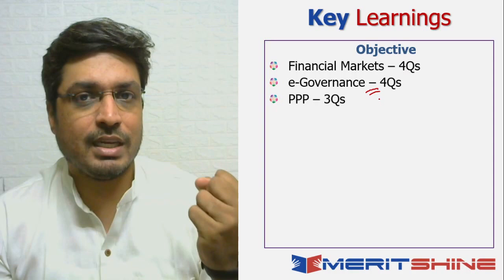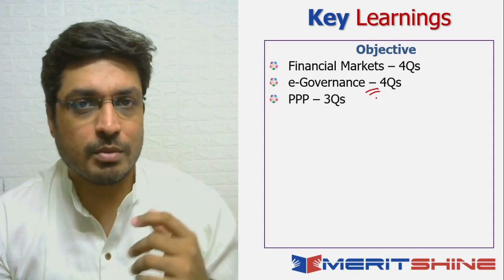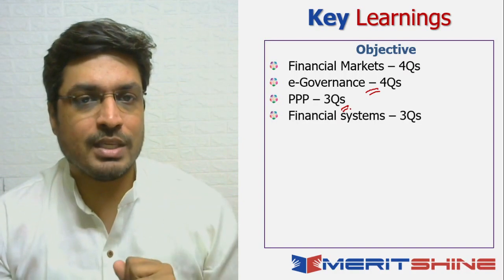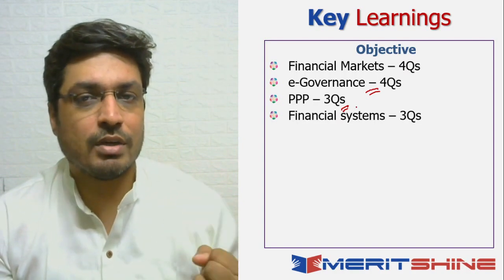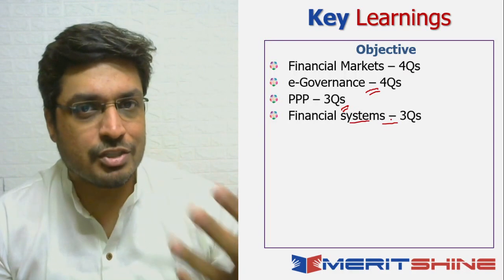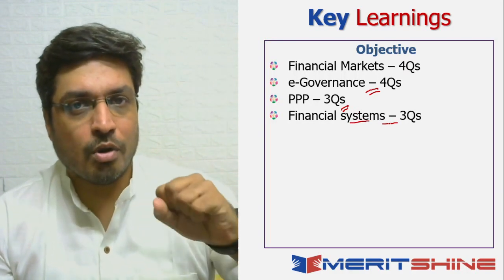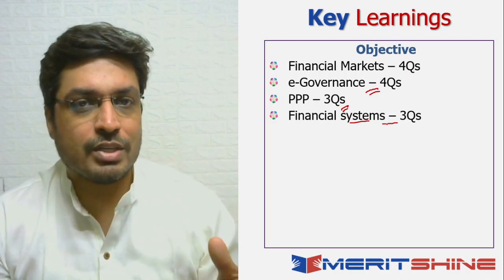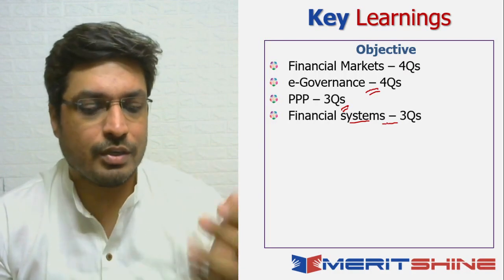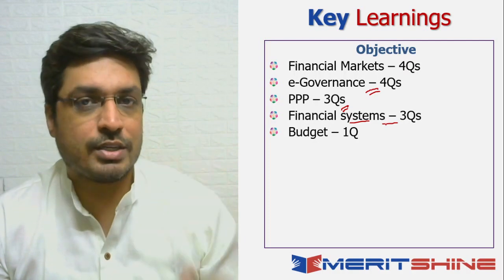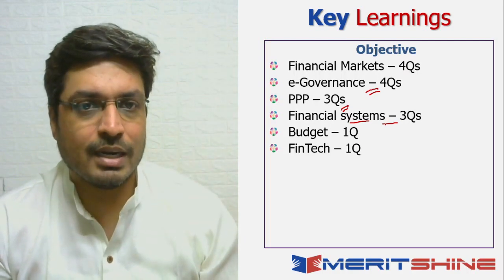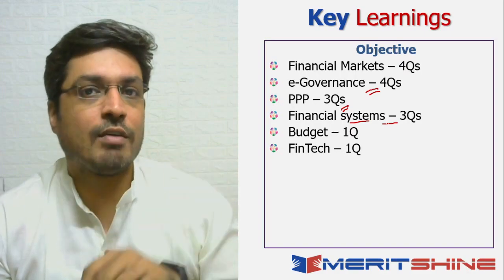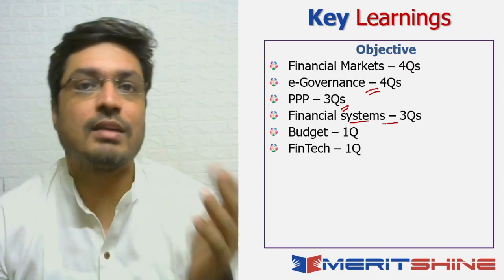There was a passage on public-private partnership with three specific questions from there. Then three questions appeared from financial systems — financial institutions, FDI percentages, and related topics. One question came from the budget, and one specific question on fintech that couldn't be classified anywhere else. These questions were identified based on memory-based feedback given by students, since we don't have the actual paper.